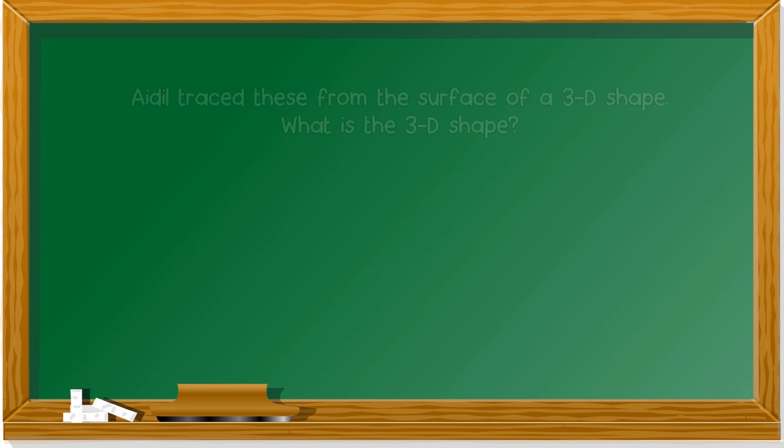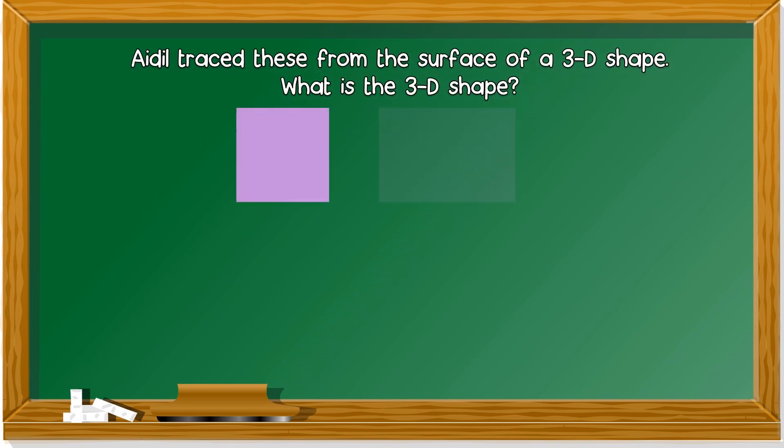Next, Adil traced these from the surface of a 3D shape. What is the 3D shape? The first shape is a square. This is a rectangle.